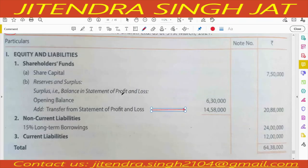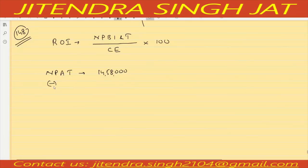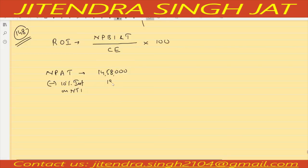We subtract 10 percent interest of non-trade investment: non-trade investment is 1,80,000, so 10 percent is 18,000. Subtracting 18,000 from 14,58,000 gives 14,40,000. Then we add interest on long term borrowing.